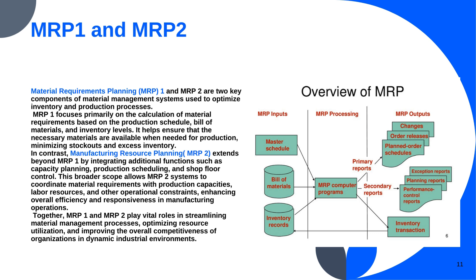Now it is time to discuss about MRP, or Material Requirement Planning. MRP 1 and MRP 2 — the full form of MRP 2 is Manufacturing Resource Planning.